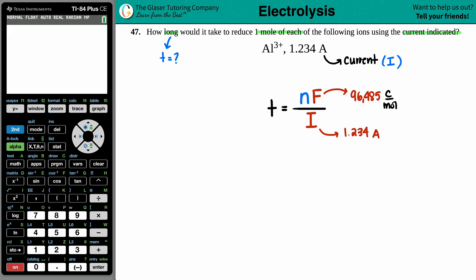And now the n value is a little bit tricky, because when we're using this formula, we're talking about electrolysis, redox reactions, electrons that are transferred.